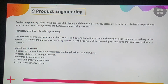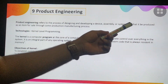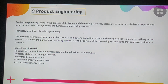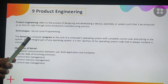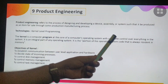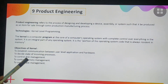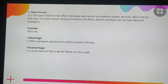The ninth technology area is Product Engineering, which refers to the process of designing and developing a device, assembly, or system for sale through a production or manufacturing process. Technologies used include kernel-level programming. The kernel is a computer program at the core of an operating system with complete control over everything in the system. Kernel objectives include establishing communication between user-level applications and hardware, managing disk and memory, and controlling task management. Types of kernels include monolithic, micro-kernel, hybrid, exo-kernel, and nano-kernel.